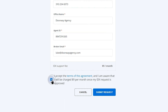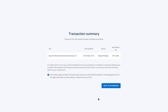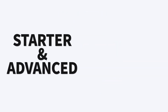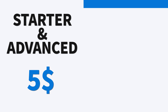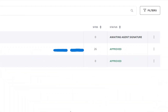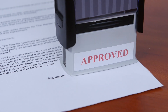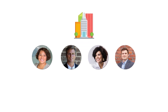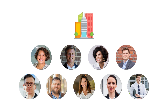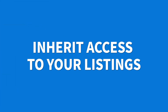After completing the form, you will notice at the bottom information about the IDX support fee. It is required to maintain the contract between you and your MLS. Users on Starter and Advanced plans are charged a $5 monthly fee, and users on the Office Builder plan will be charged $9 per month. This fee is charged per active MLS and only once the IDX contract is approved. The difference in price comes from the fact that, as a broker on the Office Builder plan, all your agents associated with your account inherit access to your listings.